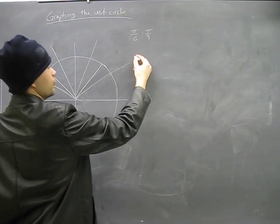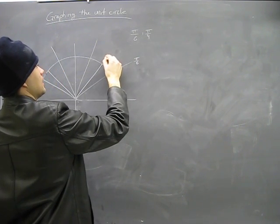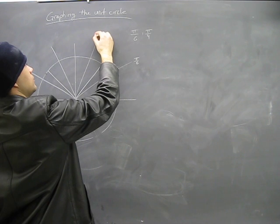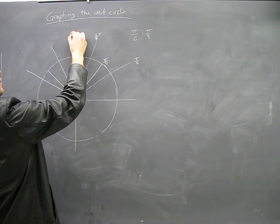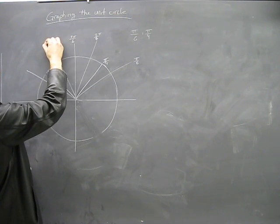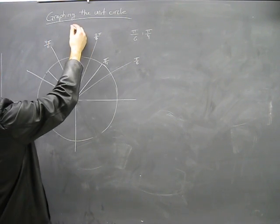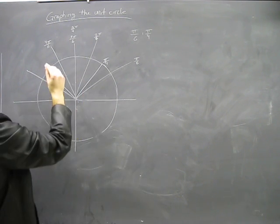Anyway, you get the idea. What I'm going to do is quickly label pi sixth, pi quarters, 2 pi sixth, 3 pi sixth, 4 pi sixth. 3 pi sixth is also the same as 2 pi quarters. Don't forget that.